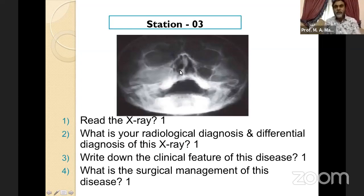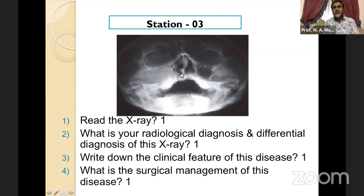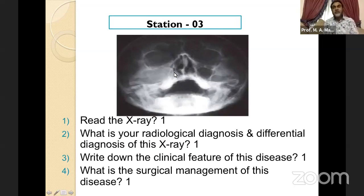My diagnosis: chronic maxillary sinusitis. You can also write chronic maxillary sinusitis with septal deviation to the right side, as DNS can cause sinusitis and is an important contributing factor here. So you can write: right-sided chronic maxillary sinusitis with septal deviation to the right.